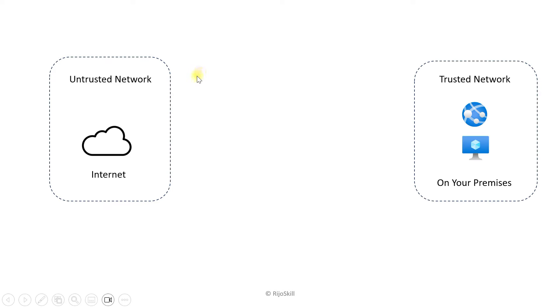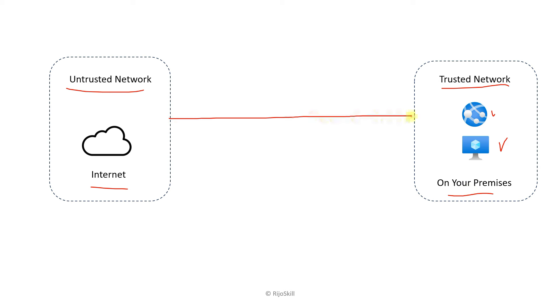To understand what a firewall is, we can look at a diagram. Basically, the network is categorized into an untrusted network — like the internet — and a trusted network — like your on-premises environment, virtual machines, or web applications. Traffic flows both inbound into your trusted network and outbound to the internet. You don't know what traffic is coming in or going out, and sometimes that traffic can be malicious.